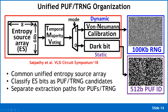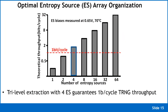The unified TRNG and PUF organization has a 512-bit entropy source array and a temporal majority voting (TMV) block that identifies which bits are good PUF bits versus TRNG bits. The target is to generate one perfect random bit per cycle from the extractor. Based on 40-nanometer test chip measurements, the minimum needed is four entropy sources, though this depends on how much entropy the process provides.